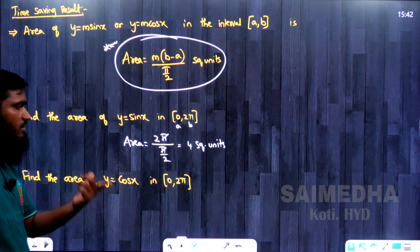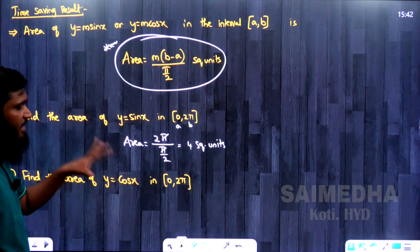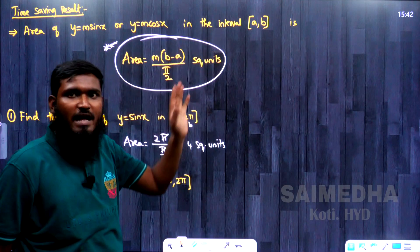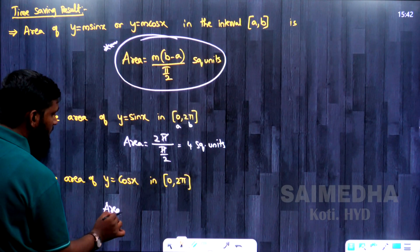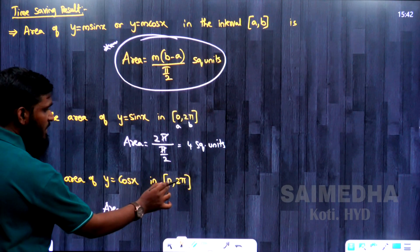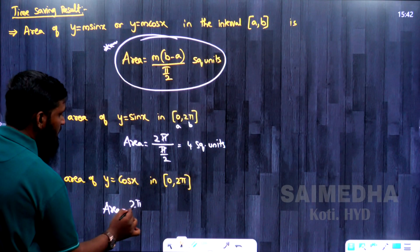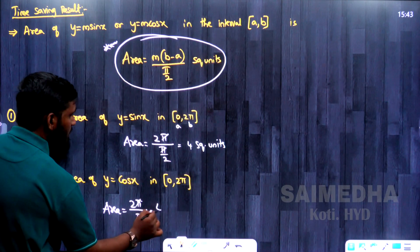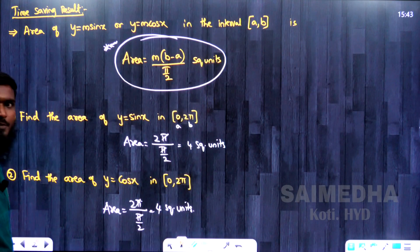Next: find the area of y = cos x in [0, 2π]. Whether it is sin x or cos x, we use the same formula. Area = m × (b - a) / (π/2). Here m = 1, b - a = 2π - 0 = 2π. So Area = 1 × 2π / (π/2). The π's cancel, giving 4 square units.